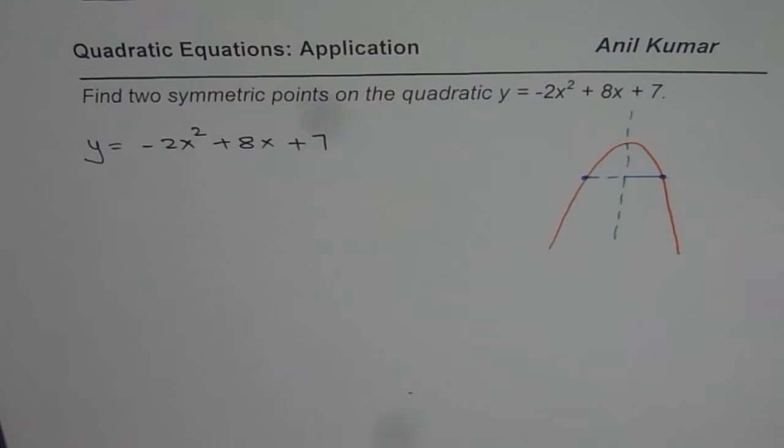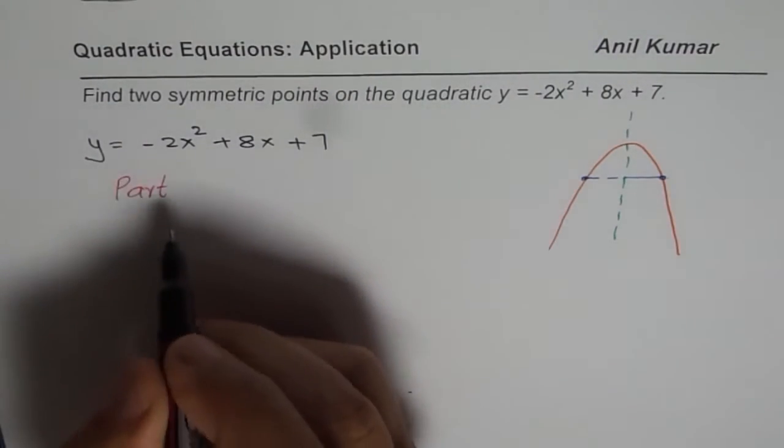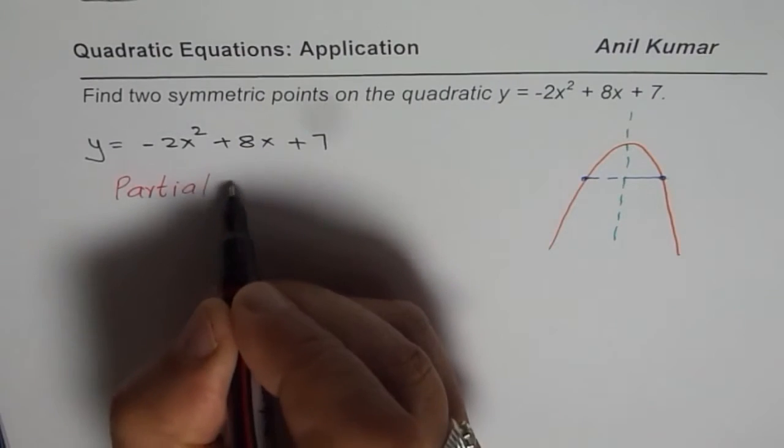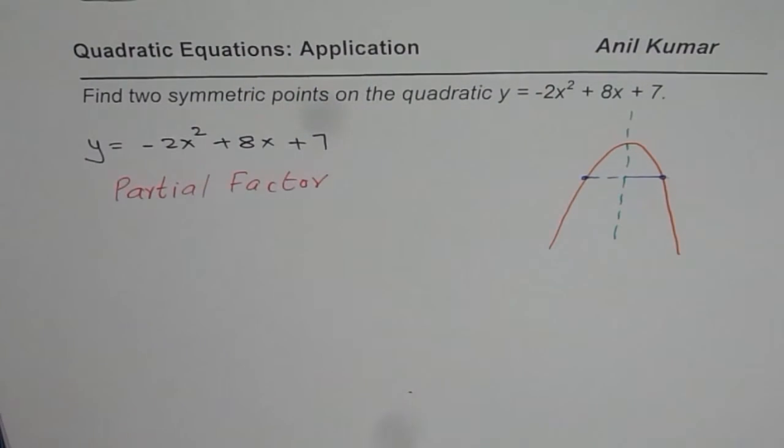So you can now pause the video, answer the question, and then look into my suggestion. The easiest way to find symmetric points is to do partial factoring. So let me write down big and bold: Partial factor. That is the best way to find symmetric points. And let me show you the technique now.